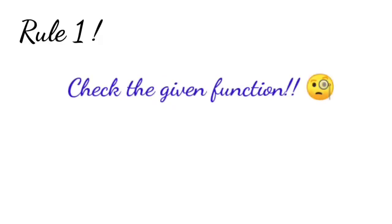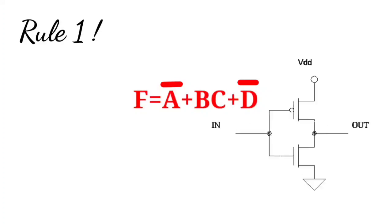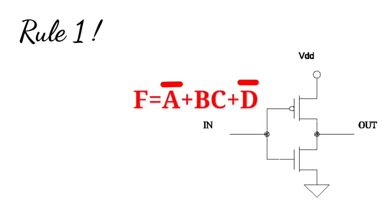Rule number one: check the given function carefully and make sure that your function is under the main complement. In some cases you will have a function without the complete complement, for example f equals A bar plus BC plus D bar — there is no whole bar. In this case, after completing your circuit with NMOS and PMOS, you need to add a CMOS inverter at the end.